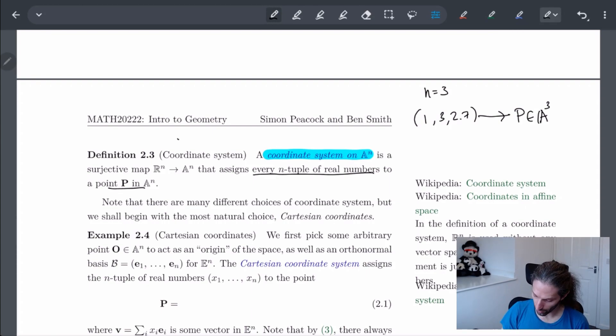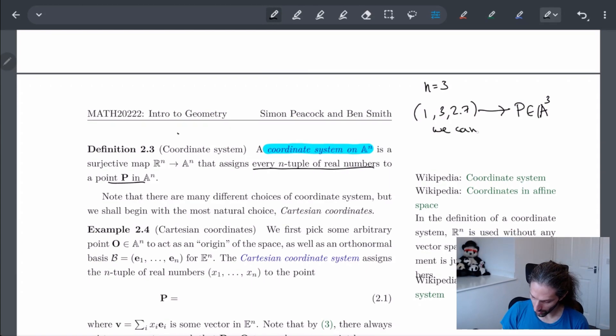So because of this, we can kind of think of P as one, three, two, seven. Even though it's not really, this is just giving it some indexing, but it doesn't really matter.